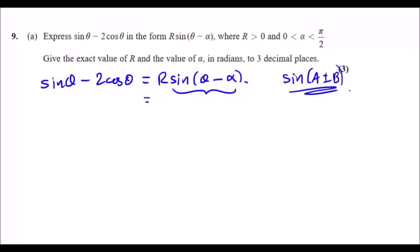Knowing that, what we could do is say this must be equal to sin θ cos α minus cos θ sin α. So sin a cos b minus cos a sin b, basically.